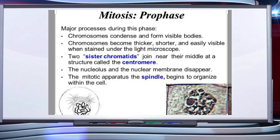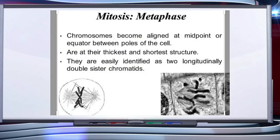The mitotic apparatus — the spindle — begins to organize within the cell. The complete disintegration of the nuclear envelope marks the start of the second phase of mitosis, metaphase. In metaphase, chromosomes become aligned at the midpoint of the cell and are at their thickest and shortest. They are easily identified as two longitudinally double structures.